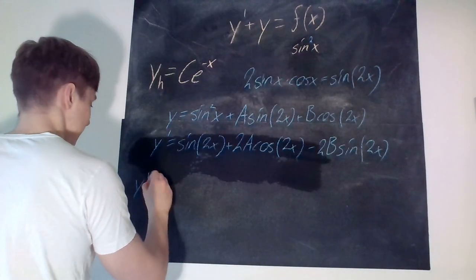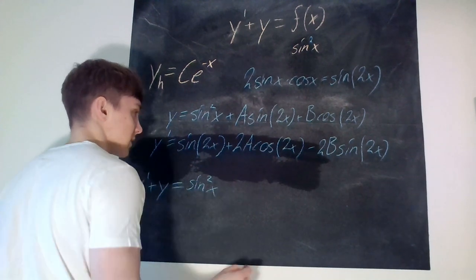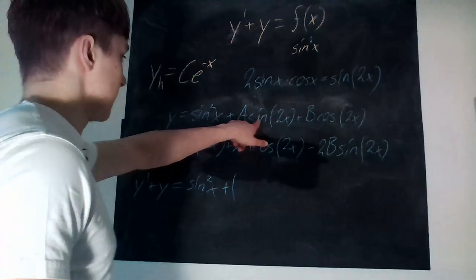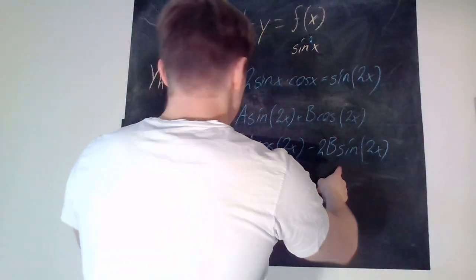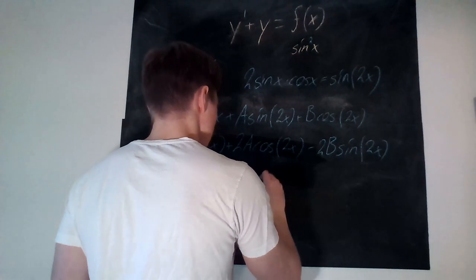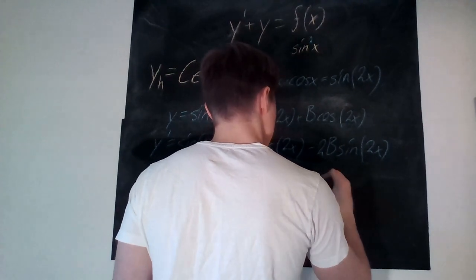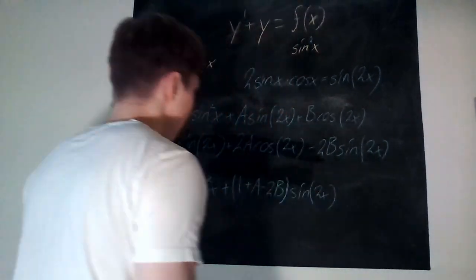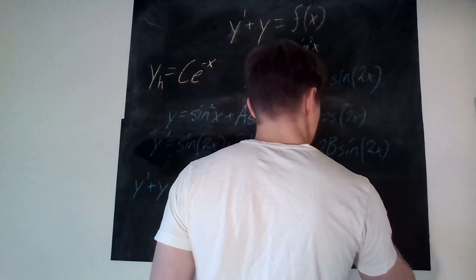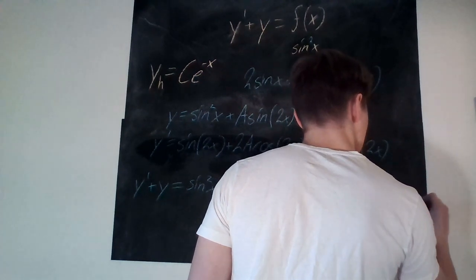Now, y prime plus y — let's gather all the sine 2x terms: we have 1 plus a minus 2b, so that gives 1 plus a minus 2b of sin 2x. And then gathering all the cosine 2x terms: b plus 2a, giving us b plus 2a times cos 2x.